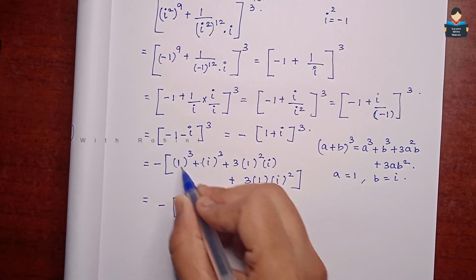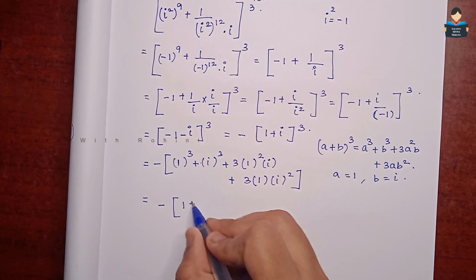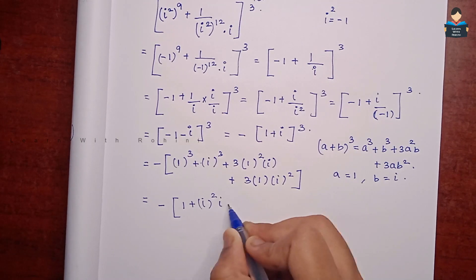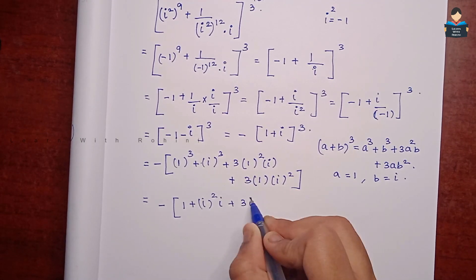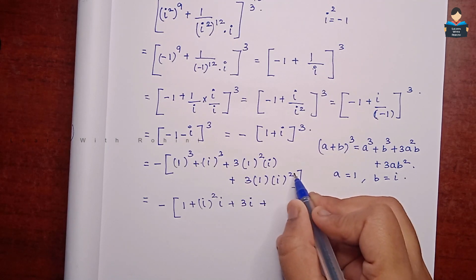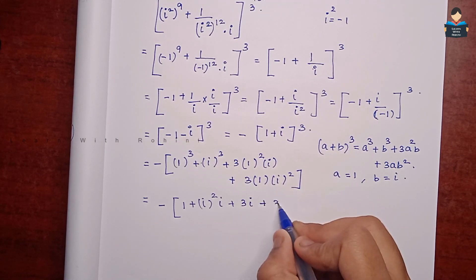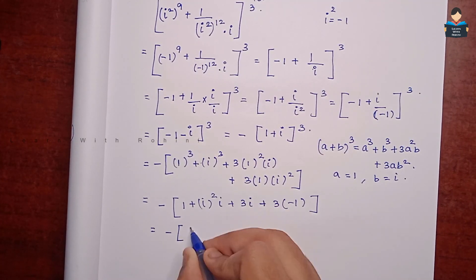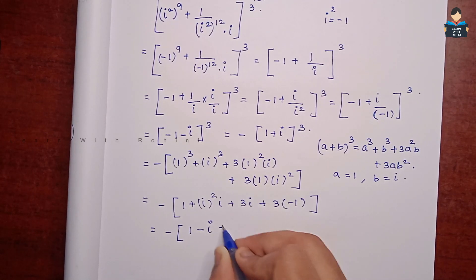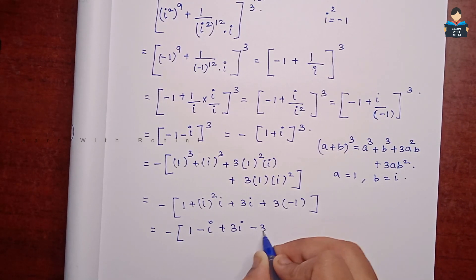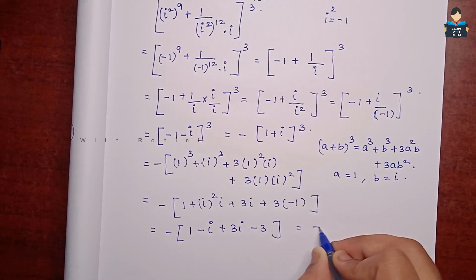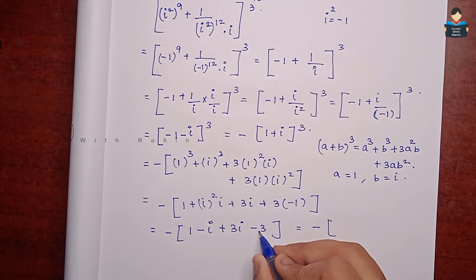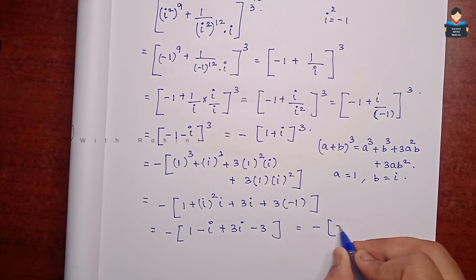So minus 1 times 1 cube is 1. i cube is i square into i, which equals minus i. So we have minus i plus 3i. Then plus i square, which is minus 1, so 3 into minus 1 equals minus 3. Combining: 1 minus 3 is minus 2 for the real part. For i terms: minus i plus 3i is 2i, and then minus 3i gives minus 2i combined.